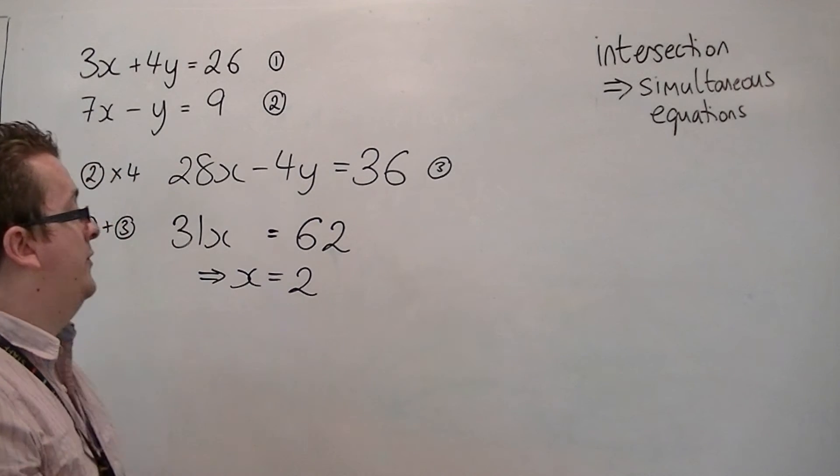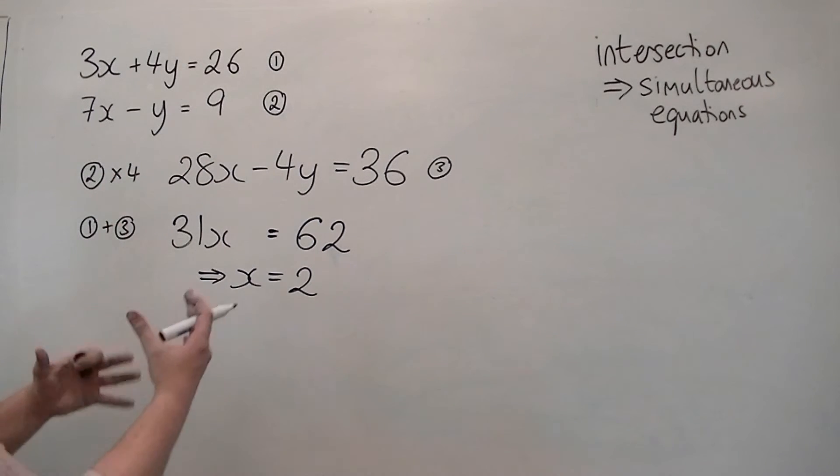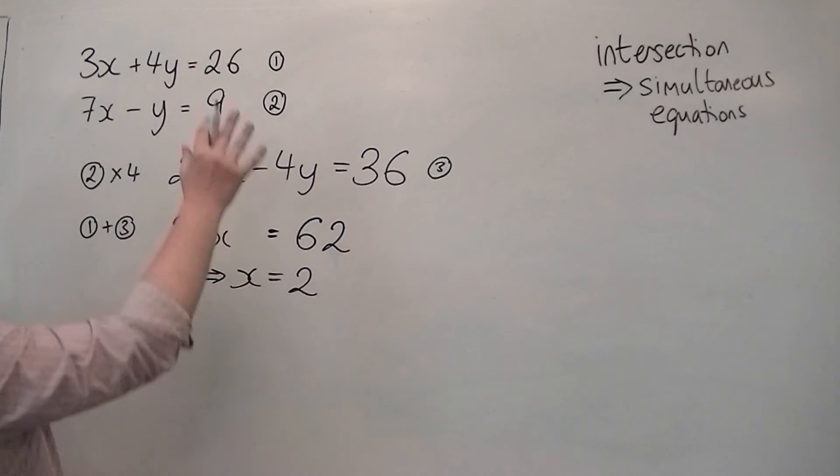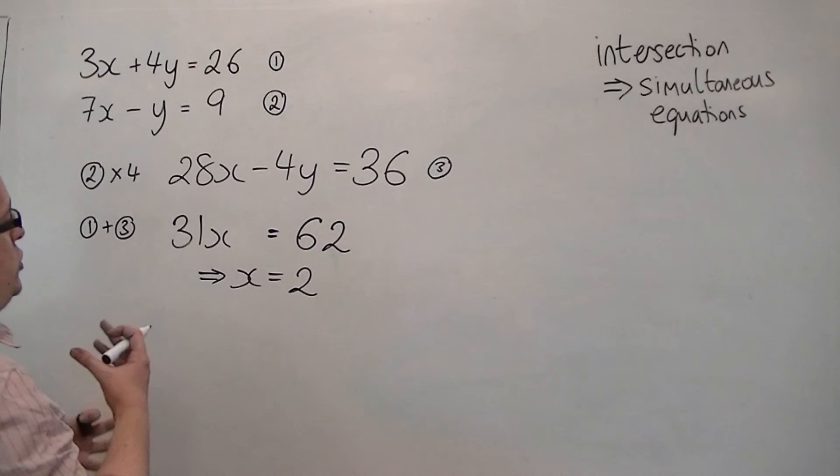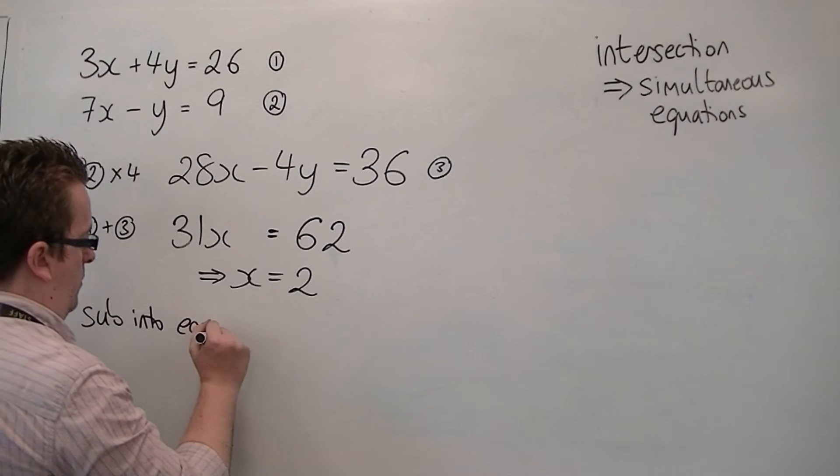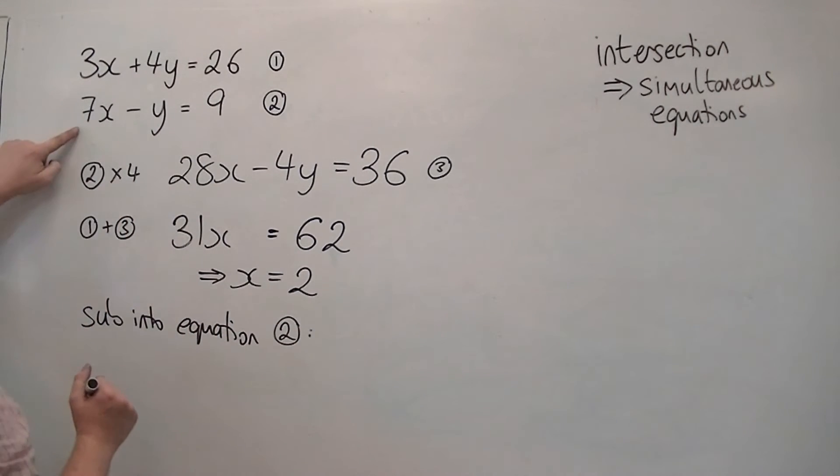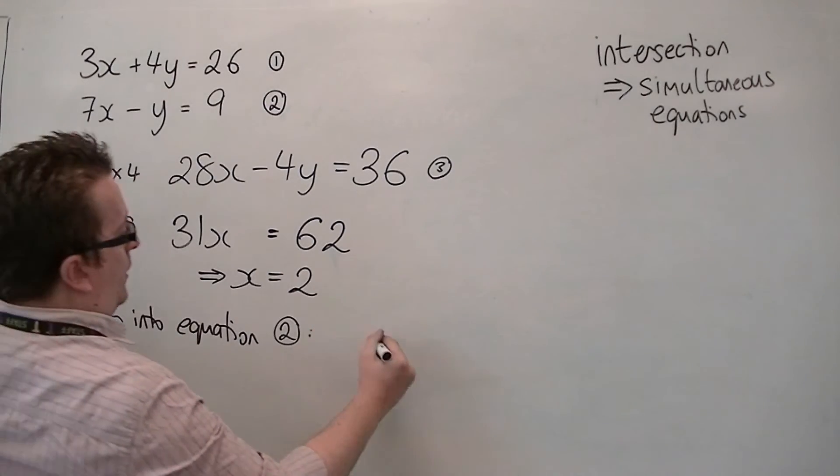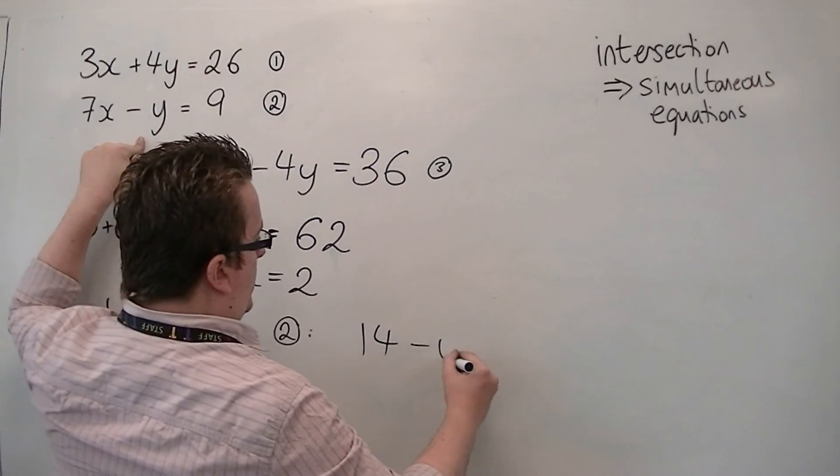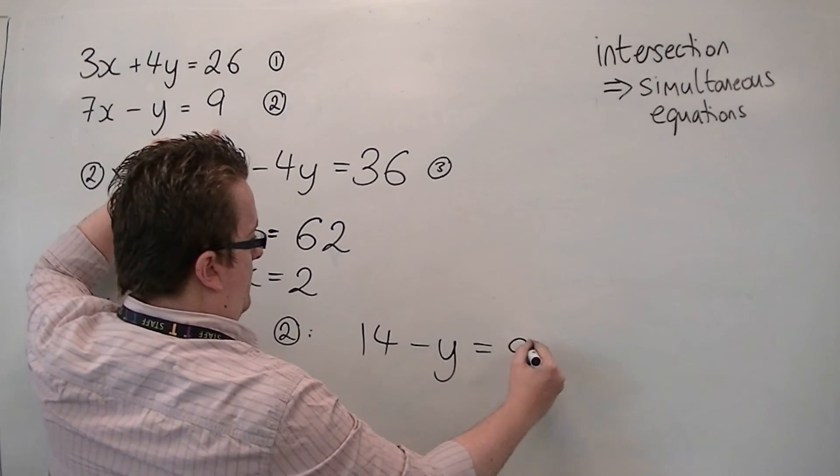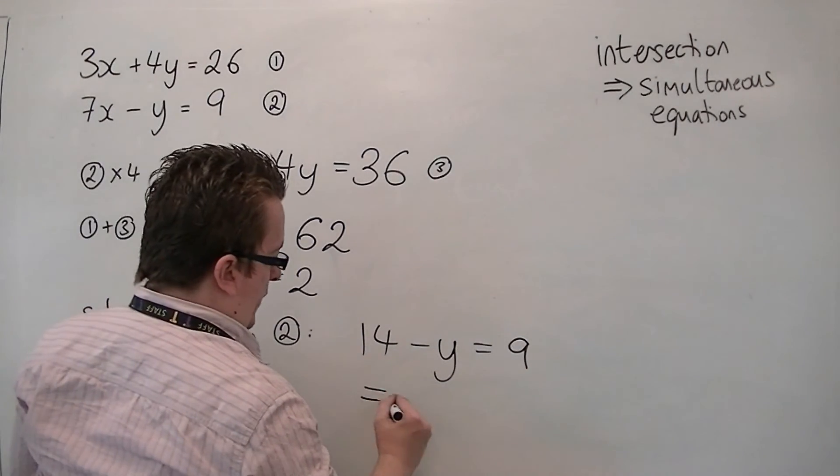So 31 times 2 is 62. So with x already in place, I just need to now substitute that into one of the two original equations in order to find y. So I'm going to substitute it into equation 2. And I'm going to get 7 lots of 2 is 14. Take away y equals 9. So y must be 5.